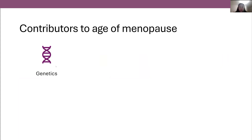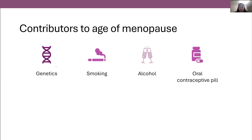Things that contribute to the age of onset of menopause: genetics plays a large role, so getting an idea from your mother, aunts, or sisters about when they went through menopause can give you an idea. Smoking reduces the age of menopause; alcohol has an association with an increased age of menopause. The oral contraceptive pill is not thought to affect the age of menopause. An early age of first period usually makes your menopause age a little bit lower, because with every period there's a large loss of the egg reserve, so if you start your periods earlier you bring the menopause age forward.